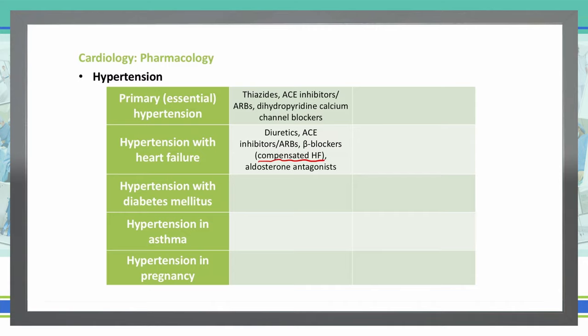Something special to note: in patients that have heart failure and hypertension, we don't use beta blockers if they are undergoing cardiogenic shock. We also need to use caution with patients that have decompensated heart failure, which we will talk about later.